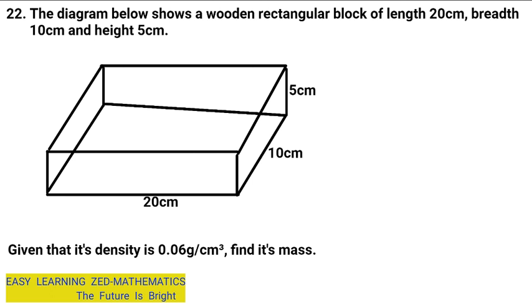To find the volume of any regular object, we use the formula: volume equals length multiplied by breadth multiplied by height. We are going to write: volume equals — the length is 20 centimeters. The longest side is the length, so 20 centimeters, multiplied by the breadth of 10 centimeters, and the height of 5 centimeters.